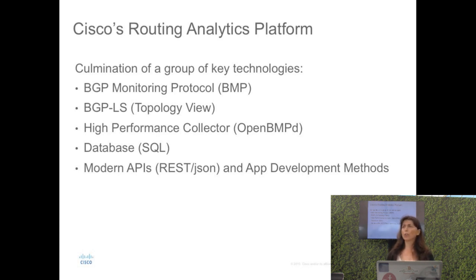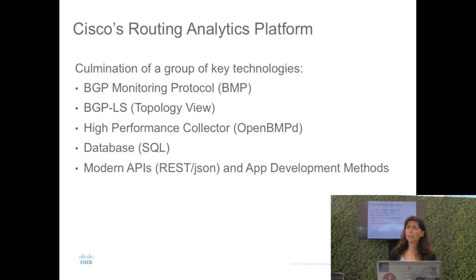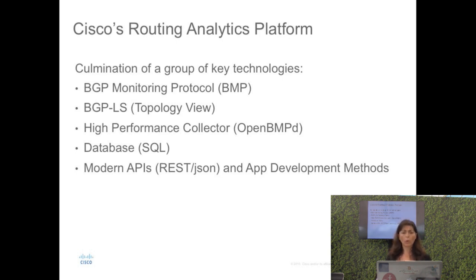The topology view — how your internal network is configured, what are your nodes, interfaces, and metrics — is captured by BGP-LS, the new address family that captures the IGP information, puts it in a BGP packet, and ships it to a BGP peer or a BMP server. The collection part is very tricky because you're dealing with hundreds of peers, each with at least 500,000 prefixes. We have an open-source collector called openbmp.org that we use for this.